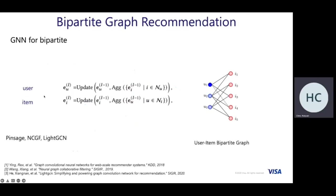Similarly, in the bipartite graph, we can have GNN models for users and items. For users, each layer aggregates messages from neighbors as well as information about the node itself to update user embeddings. A similar strategy applies to items — we update item representations by aggregating information from neighbors. The neighborhood of users consists of item nodes, and the neighborhood of items consists of user nodes. We keep updating these embeddings using message passing schemas. There are several very common and popular frameworks for bipartite graph GNN.